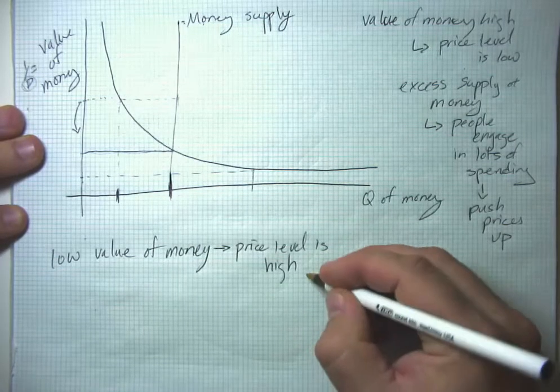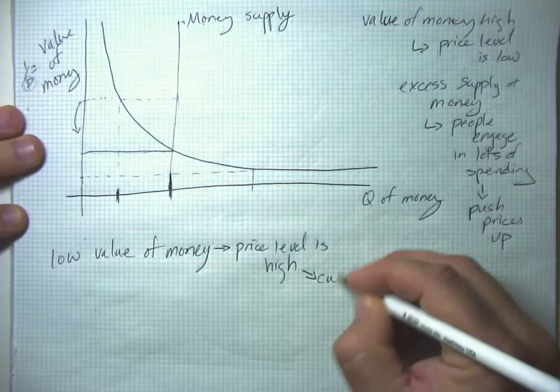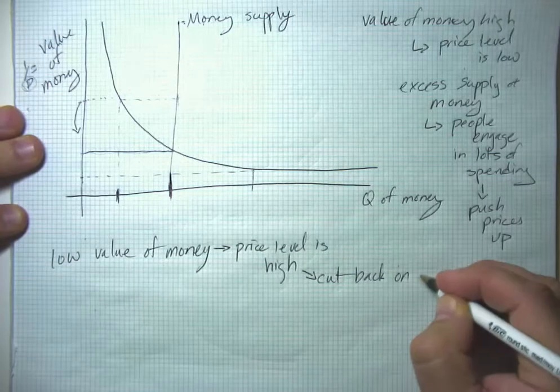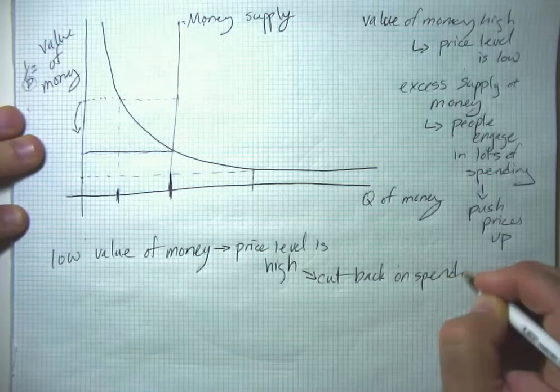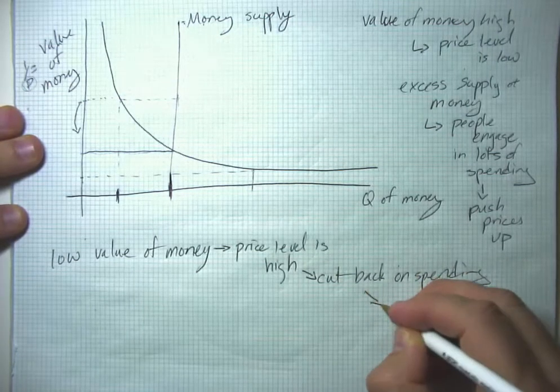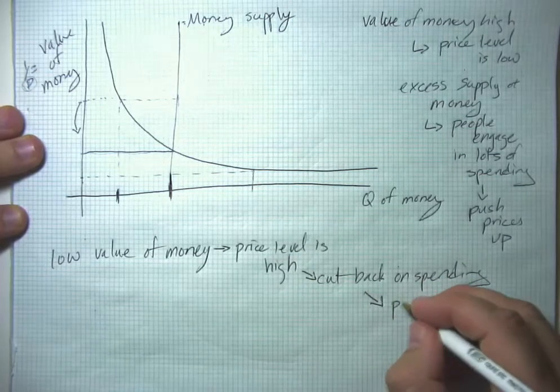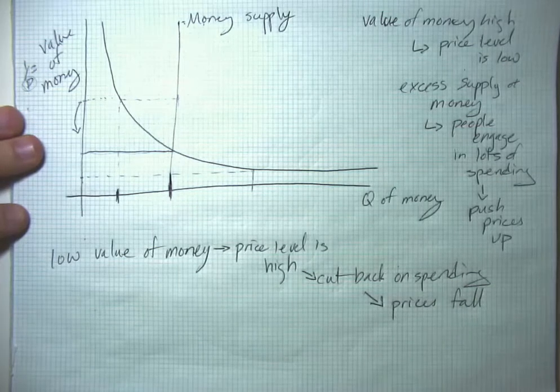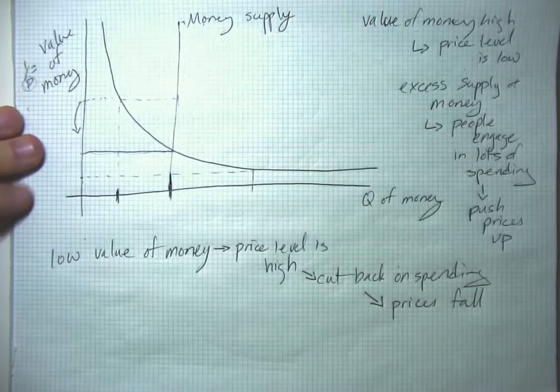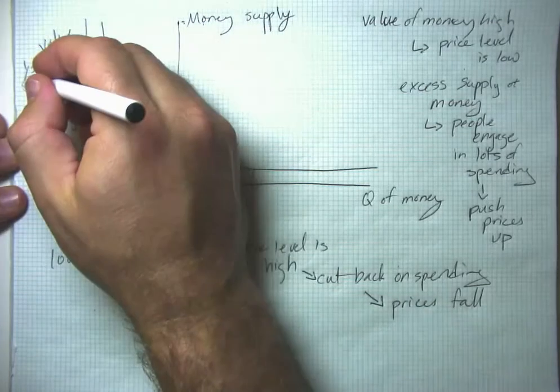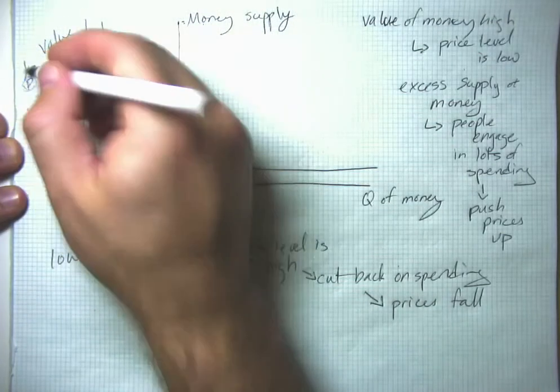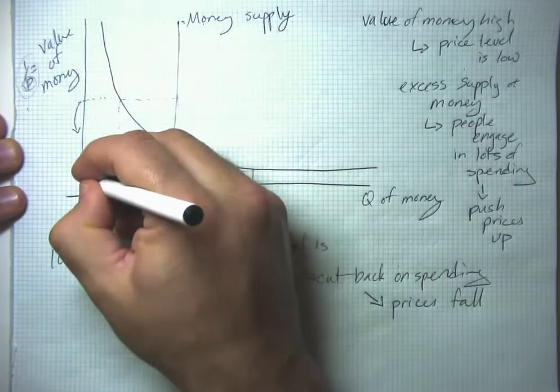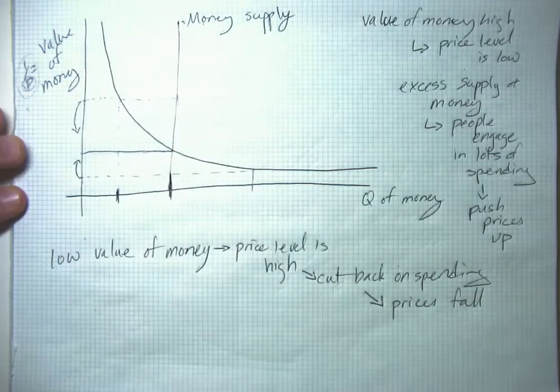So people are going to cut back on spending as much as they're able. And as people cut back on spending, that's going to cause prices to fall, because there's a fall in demand all across the economy. And when prices fall, of course, this term on the bottom here gets smaller, which means the overall term gets bigger, and so the value of money is going to rise.